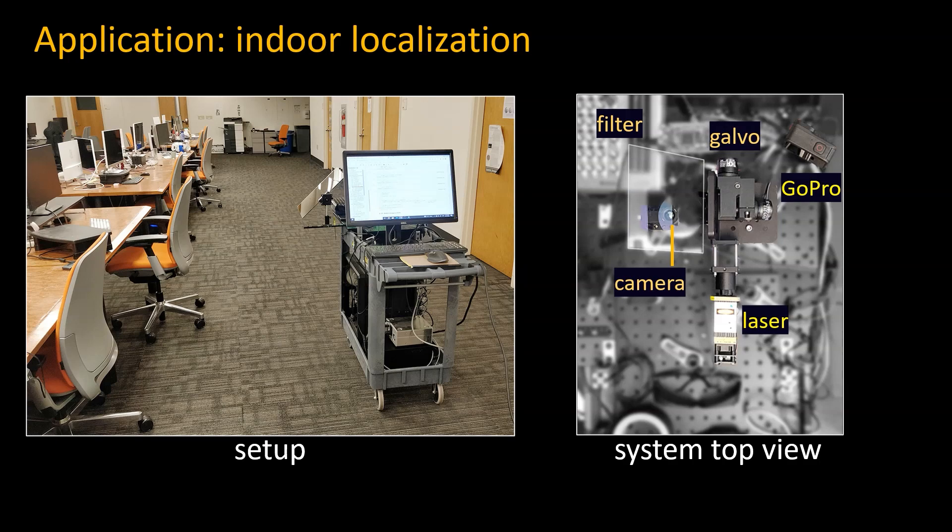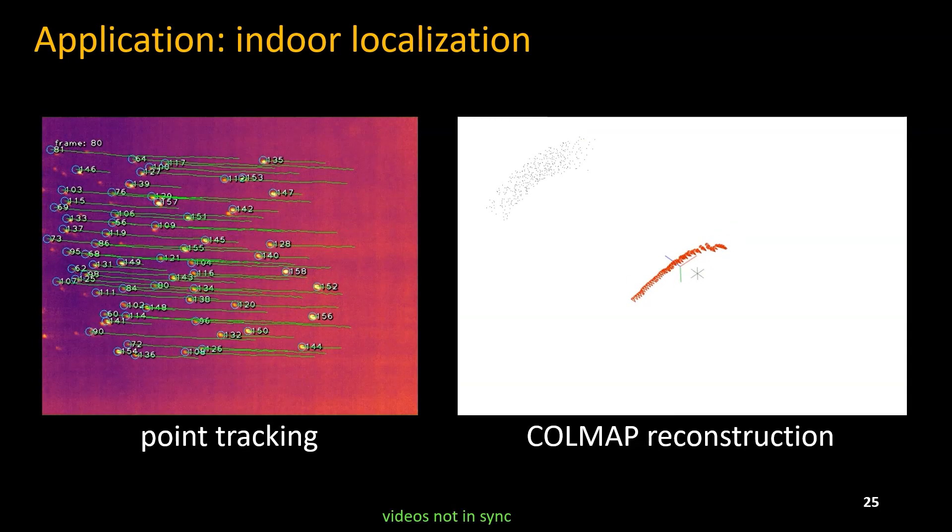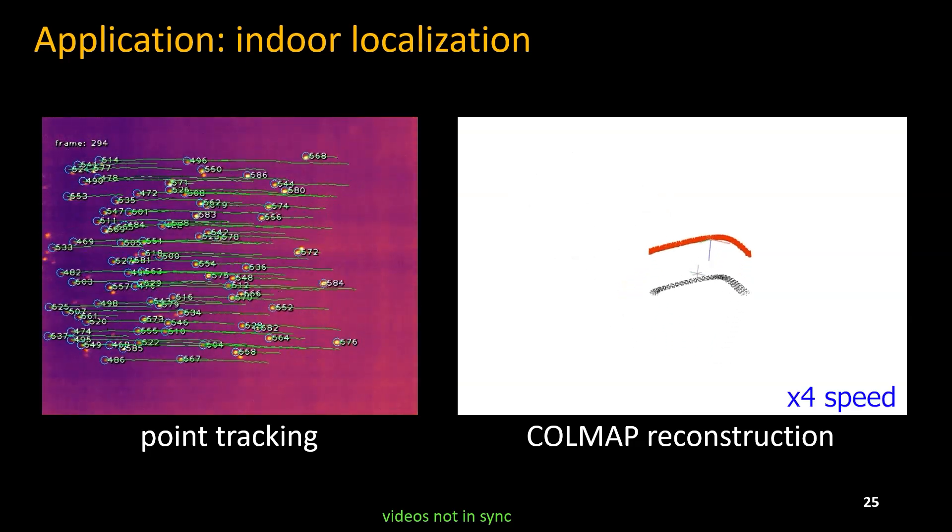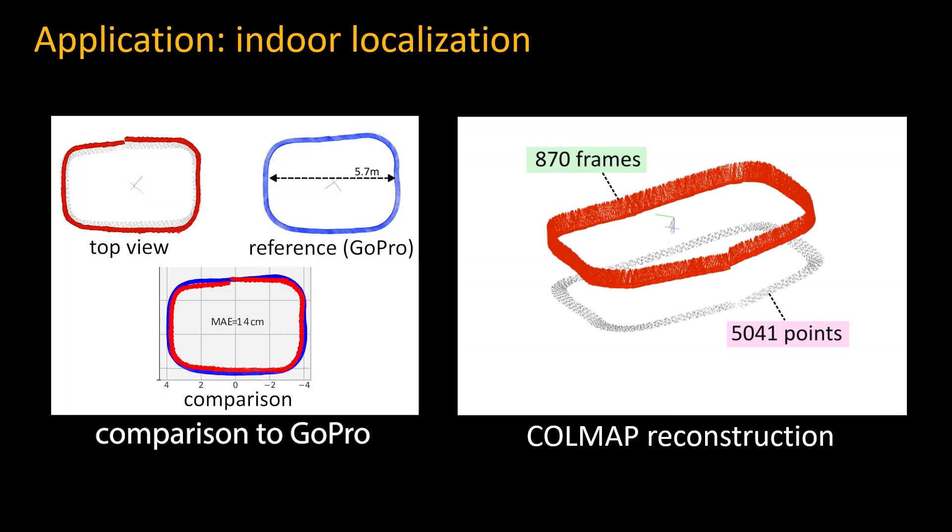Finally, in this experiment we put the system on a cart and use it to localize the cart's position and motion in an office. Here we point the system at the floor using a mirror and drive it in a 20 meter loop around the desks seen on the left. We track the pattern points created on the floor and use them to recover the cart's motion. In the paper we show the reconstruction accuracy by comparing the motion computed with our system to the motion computed from a reference GoPro camera directed at the office environment. Notice that our recovered motion completes a loop even though there are no point matches between the first and last frames.